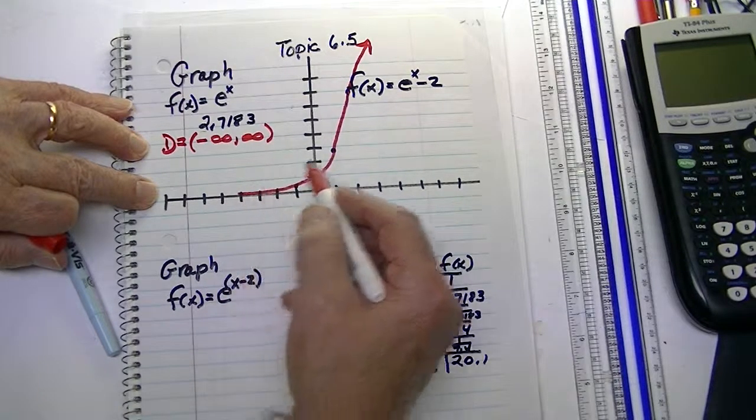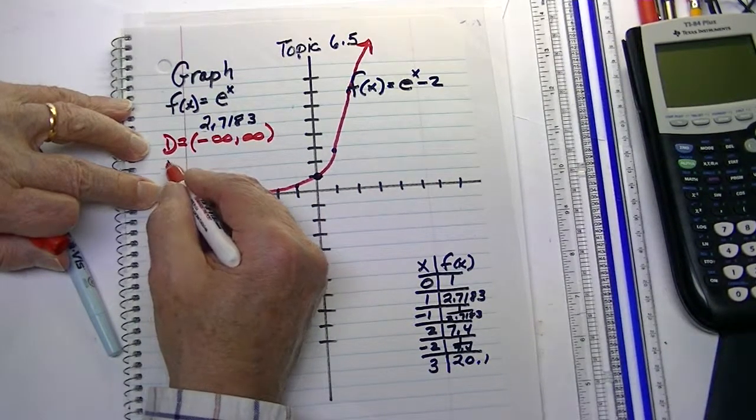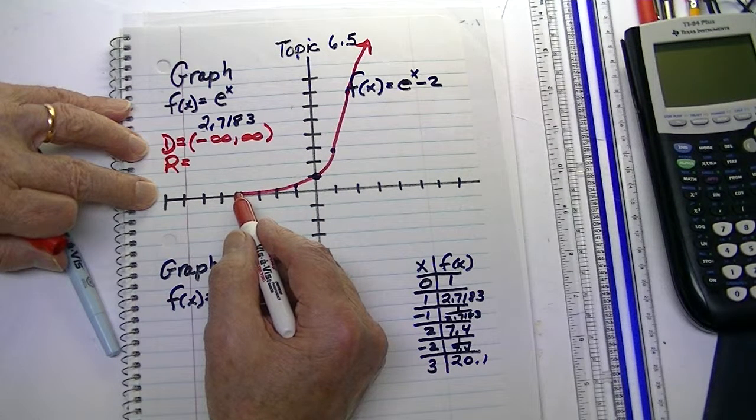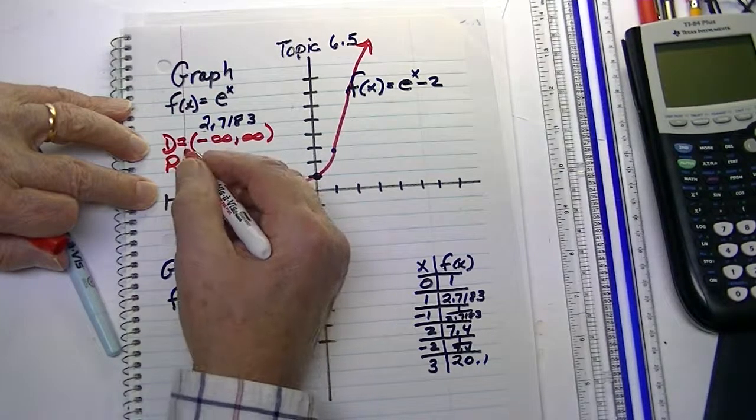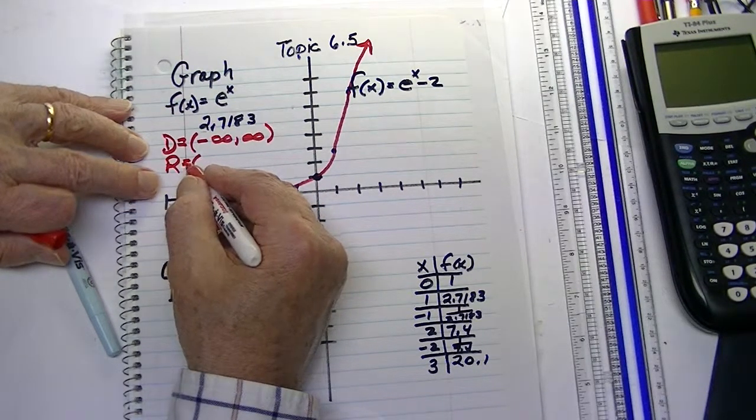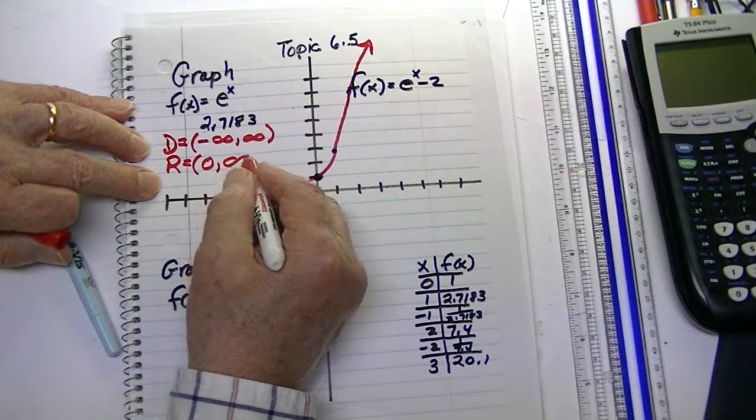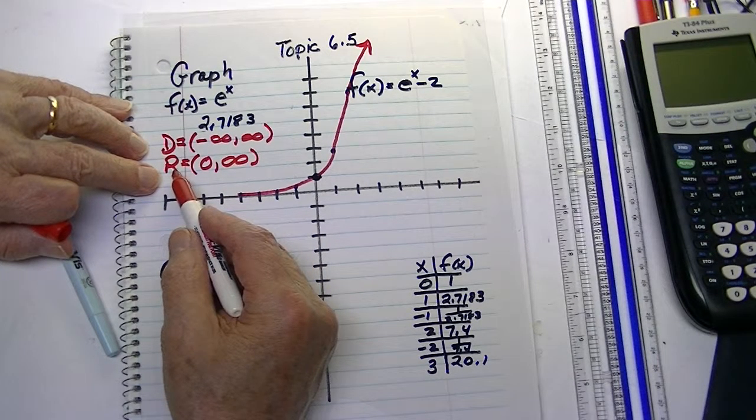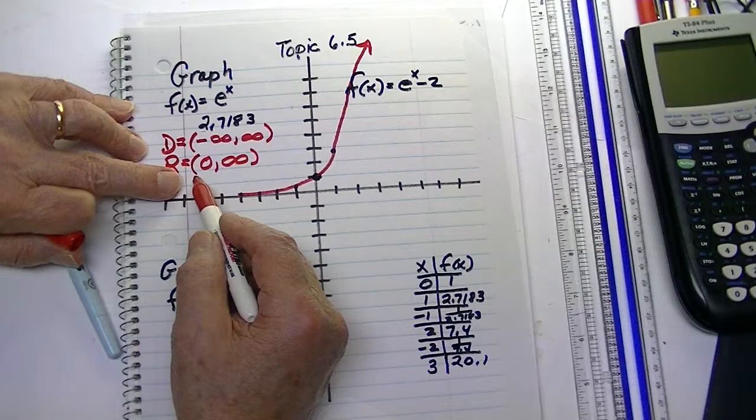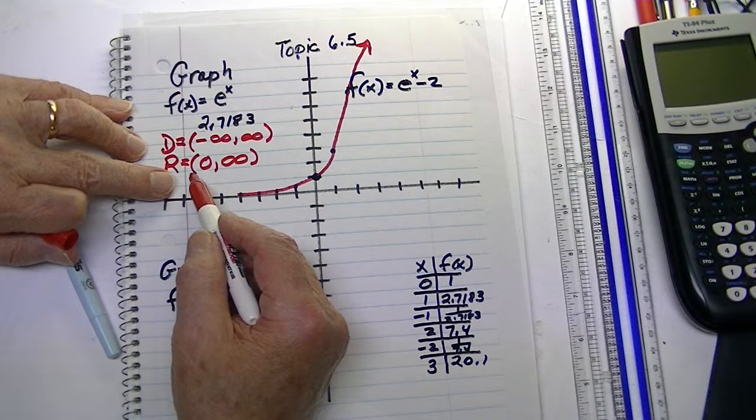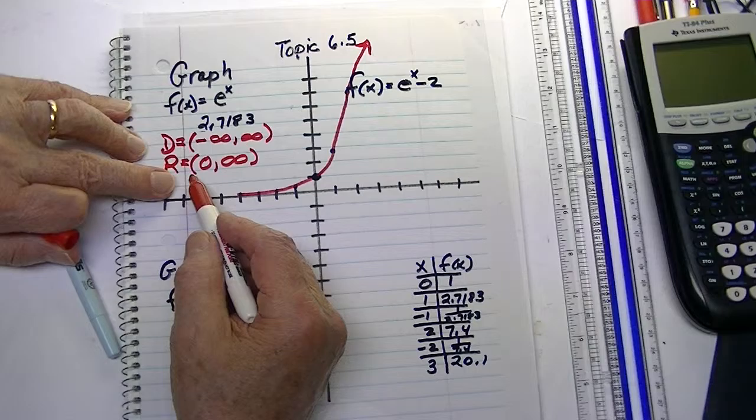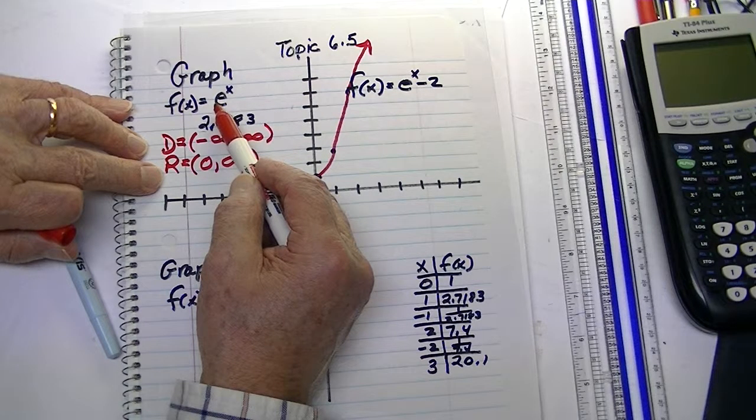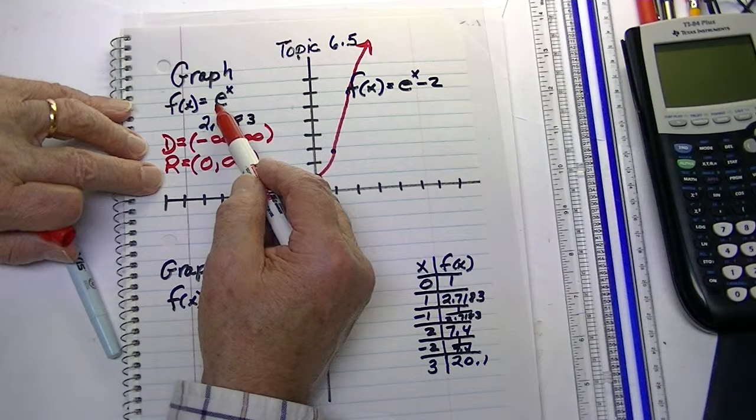Now, for our range, for this one, again, it never quite reaches 0. So, it's going to, again, start just beyond 0, and go to positive infinity. Now, notice the range has a parenthesis there. That parenthesis is because it never quite reaches 0. Okay, so this is our first one, in which it's e to the x power.